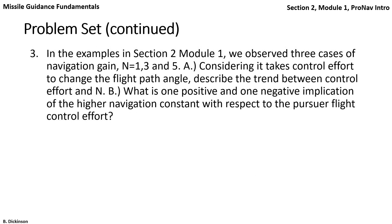In the third problem, let's reflect that we observe three cases of navigation gain, 1, 3, and 5. Considering it takes control effort to change the flight path angle, describe the trend between control effort and the values of n. What is one positive and one negative implication of the higher navigation constant with respect to the pursuer flight control effort?